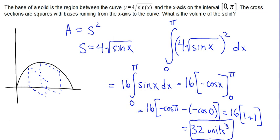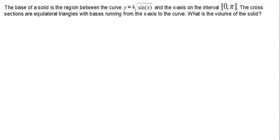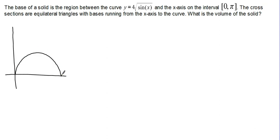The next one we're going to take a look at is very similar. We're going to look at the same function, 4 root sine X, except this time the cross-sections coming up out of your screen are going to be equilateral triangles, and we're still going to look on the interval from 0 to pi. Our shape will look the same — here's our function, 4 root sine X — but instead of having squares, we'll have equilateral triangles sticking straight out of your screen at you.